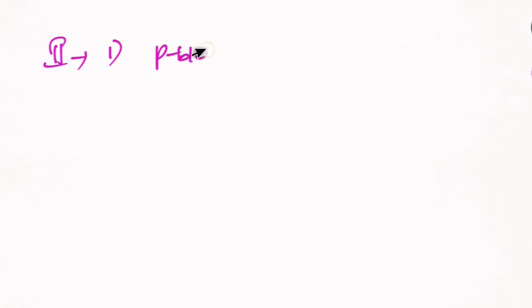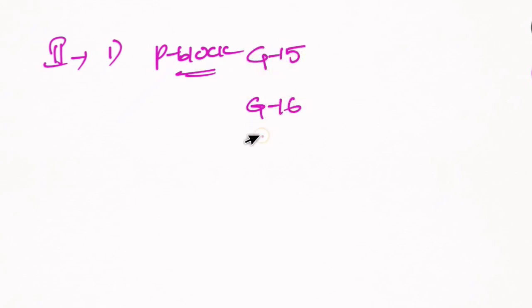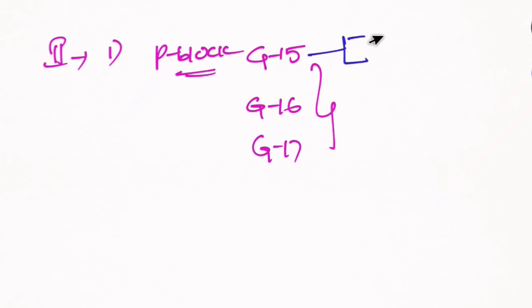Let us discuss total second year chemistry. First, P-Block is very important - P-Block is 8 marks. P-Block includes Group 15, Group 16, and Group 17 - these 3 chapters are 8 marks. Group 15 has 4 marks which covers Haber process and Oswald process. We will place these in the third bit.